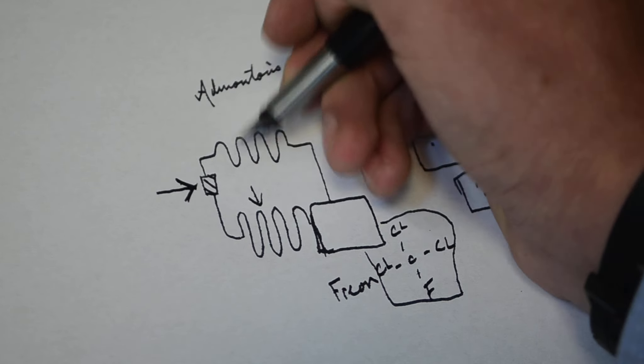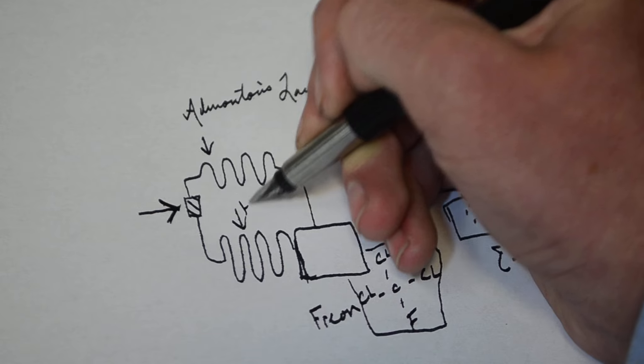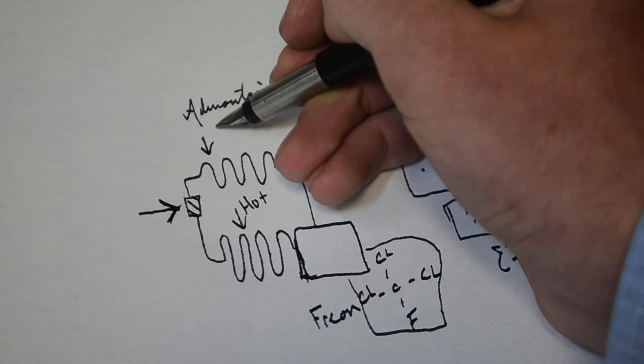At this point, the freon is going to expand, so it'll be a lower pressure. What this means is that this compressed spot is going to be our hot, and the part where it expands is going to be our cold.